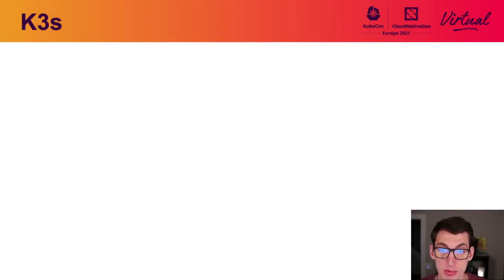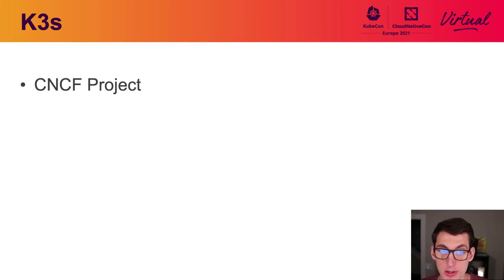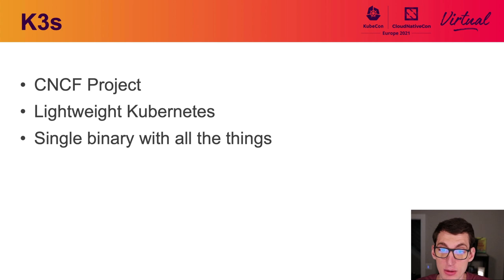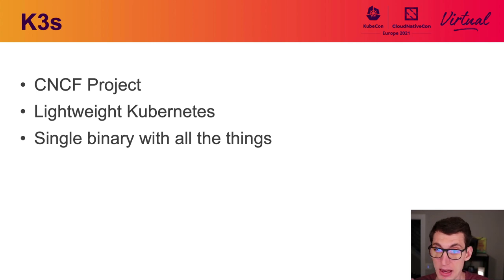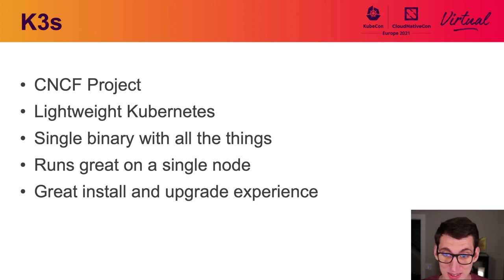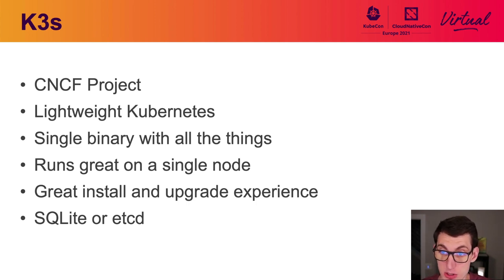Let's talk about software. We'll start with K3S, which is going to be the backbone of your home lab Kubernetes cluster. K3S is a CNCF project originally started by the folks at Rancher. It's a lightweight Kubernetes distribution — they've stripped out cloud provider-specific things you don't need. It's packaged as a single binary that holds everything, including your container runtime, ingress controller, and basically everything you need to get started. It runs great on a single node or many, with a really easy install and upgrade experience by simply replacing that single binary. The control plane uses either SQLite by default or etcd if you want high availability.